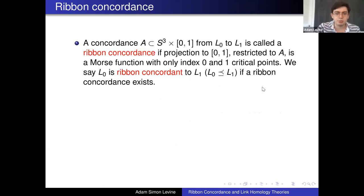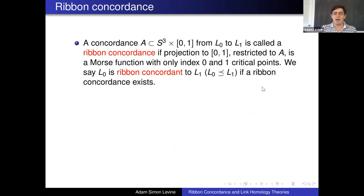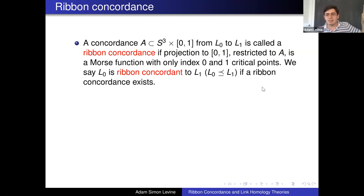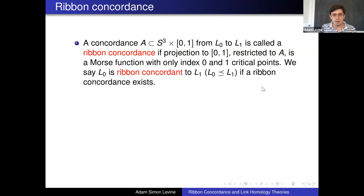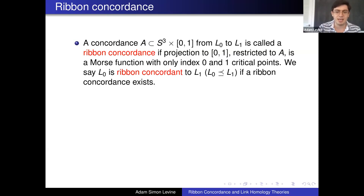Now what I'm really interested in is what we call a ribbon concordance. A specific concordance — which could be between knots or between links — is called a ribbon concordance if, when you project it onto the interval coordinate, you get a Morse function on the surface. For a typical surface a Morse function would have critical points of index zero, one, and two. We call this ribbon if it only has index zero and index one critical points. We say that L0 is ribbon concordant to L1, denoted by a less-than-or-equal-to symbol, if such a ribbon concordance exists.